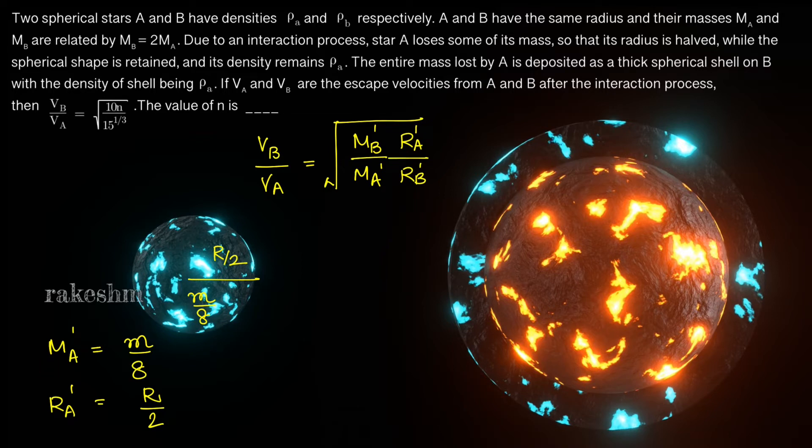The new mass of B is the initial mass which is 2M plus the mass which is lost by A which is 7M/8.